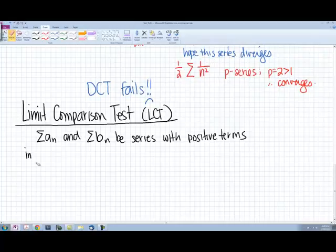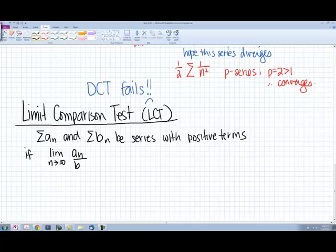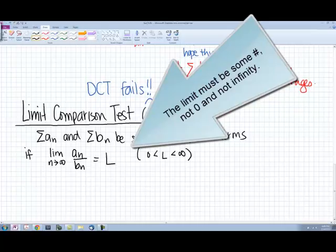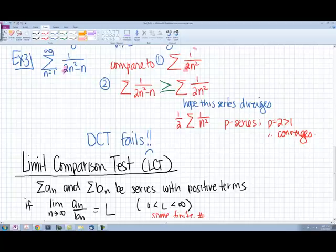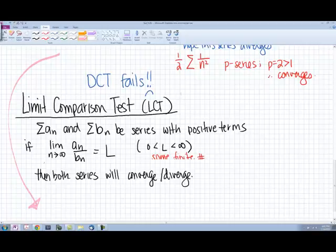If the limit as n approaches infinity of a sub n over b sub n equals l, then both series will converge or diverge. So let's actually continue the problem that we were working on above and take a look at this. And I'm just going to continue it down here below. We were going to compare our series to 1 over 2n squared. So instead of our inequality, let's compare with the limit.